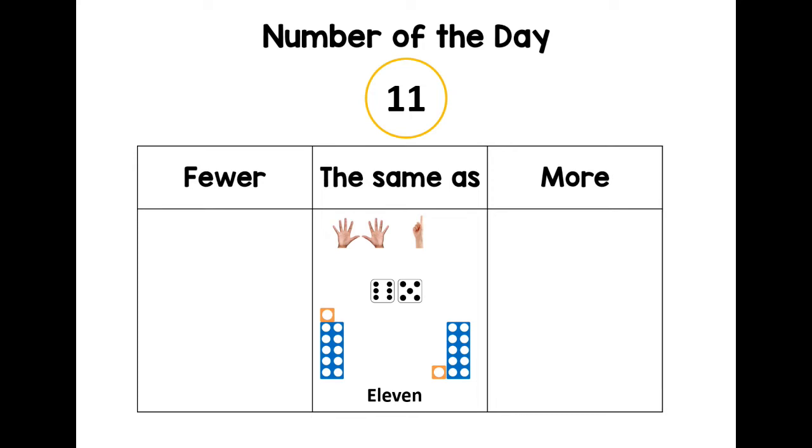Now can you think of a number that is fewer than 11? If you can imagine a number track, all of the numbers that you say before you get to 11, they are fewer or less than. Can you think of one? I thought of seven.